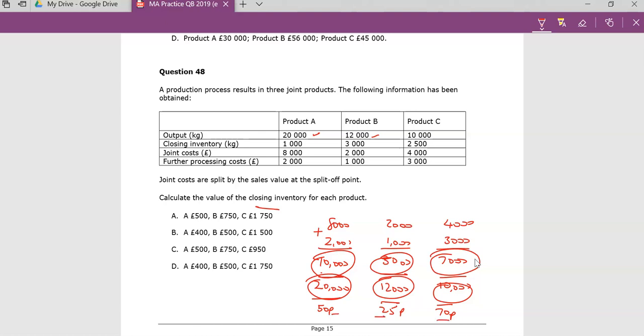Now the next step really is this question of, the question says that you have closing inventory of 1,000. So it means that you made 20,000 kilograms and you must have sold 19,000 kilograms to have 1,000 kilograms left. So the question is, what is the value of these 1,000 kilograms? Well, if each of them is 50p, that means that 1,000 of them must be 500 pounds.